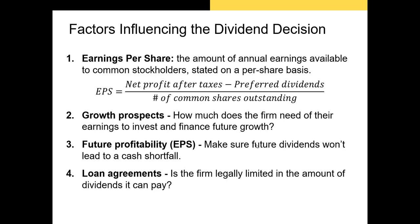Finally, we have loan agreements. Firms that borrow from investors or receive a bank loan might be subject to debt covenants in their loan agreement. Debt covenants indicate specific actions the firm can or can't take while it owes creditors money. Several covenants relate to the dividend decision — a firm might have a covenant saying it can't issue or increase a dividend while it owes money to the bank. Creditors don't want the firm paying out money to shareholders while it still owes them.